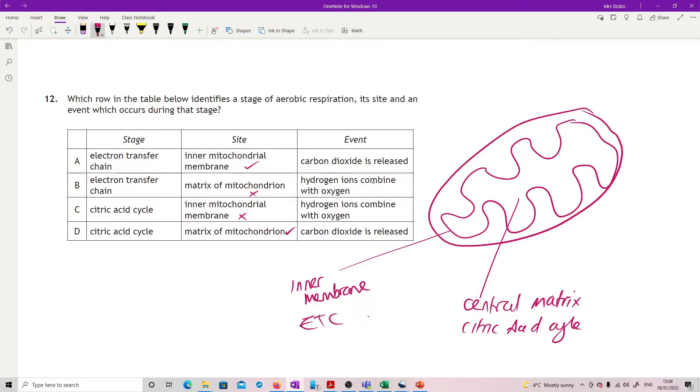The event in the electron transport chain: carbon dioxide is released? No, we will get some water out of that when the hydrogen ions and the high energy electrons at the end of the transport chain combine with oxygen. We'd already taken out B. Then citric acid cycle doesn't make water but it does release carbon dioxide. You really have to know your stages for that one. It's a reasonably tricky question.